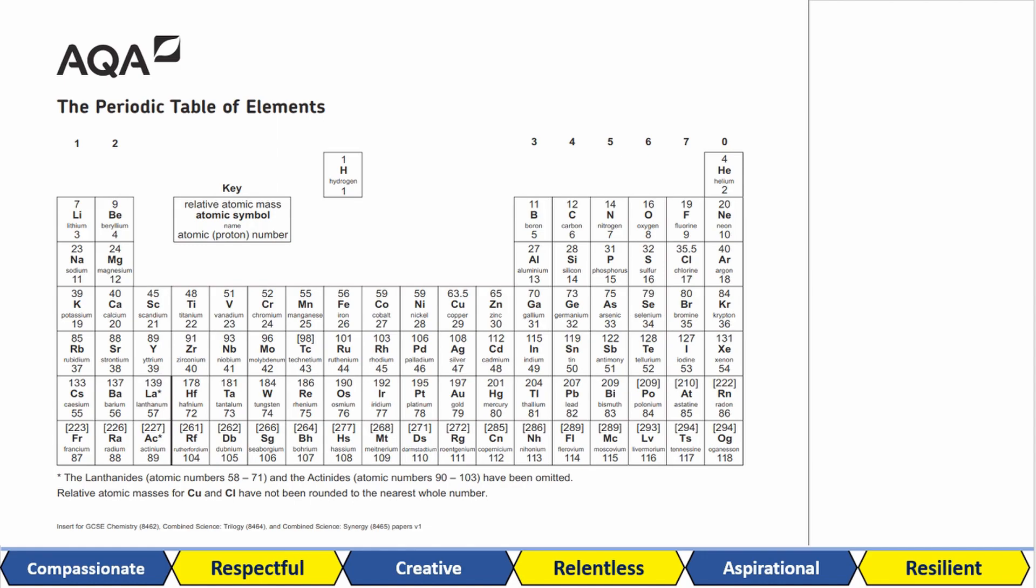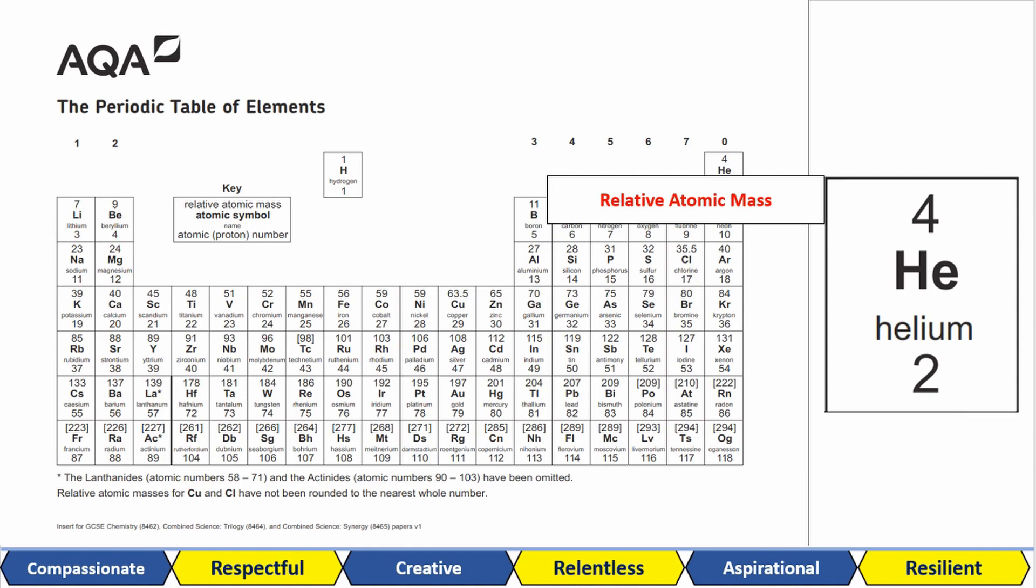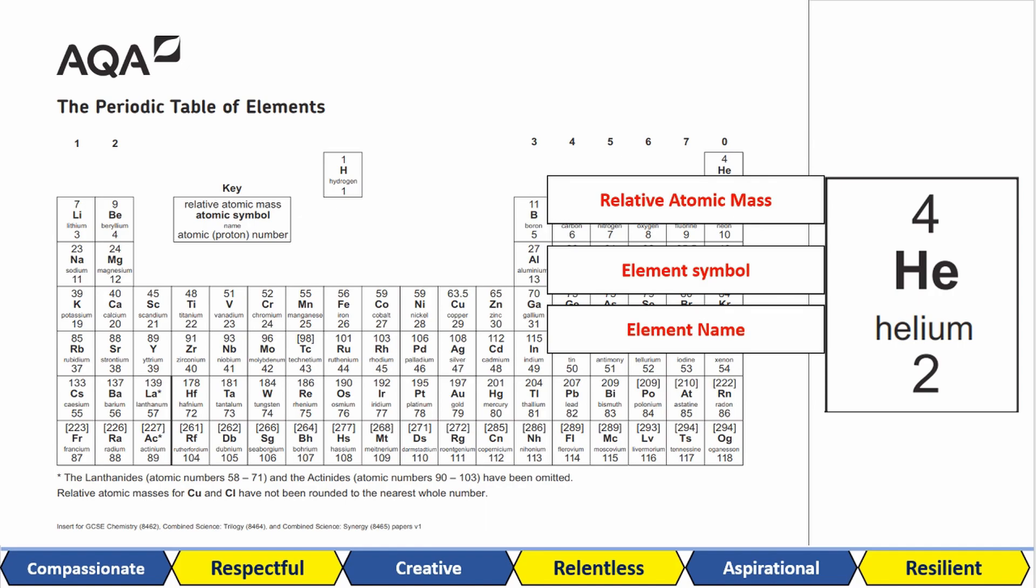For this section of your GCSE we only need to worry about one number for each element. Let's look at helium for an example. You see that each box has four pieces of information. The massive number on the top is the relative atomic mass. Then we have the element symbol. Next is the element name and finally the bottom smaller number is the atomic number.